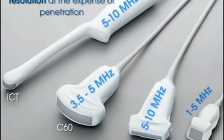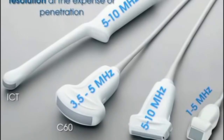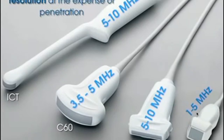Transducers have different frequencies they can toggle. Higher frequency transducers have better resolution but cannot penetrate as far into the body. A high-frequency linear transducer is good for superficial structures when depth of penetration is not a concern. A lower frequency transducer is good for penetrating deeper into body tissues, such as when doing a FAST exam or looking at the heart or aorta — at the expense of resolution. You always want to use the highest possible frequency that will get you to the depth of interest.